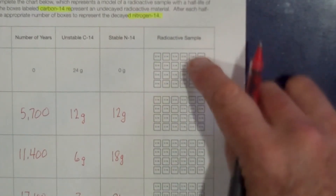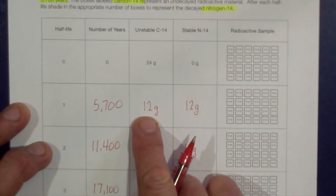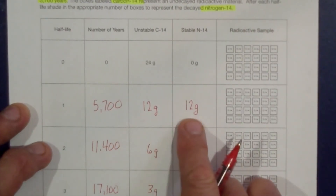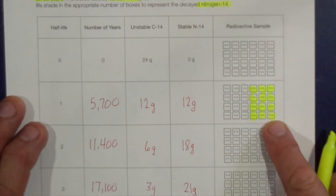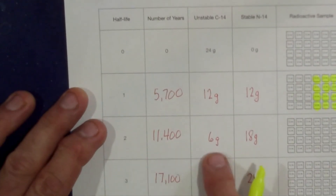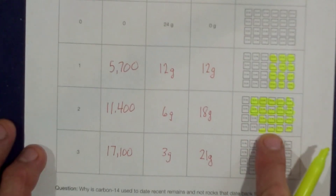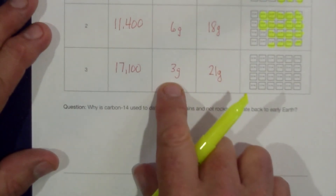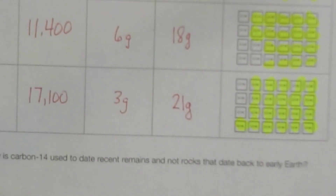For filling in the boxes: at zero half-lives, all boxes remain blank (all carbon-14). After one half-life, we have 12 grams of carbon-14 and 12 grams of nitrogen-14 — shade in 12 boxes to represent the nitrogen-14. After two half-lives, we have 6 grams of carbon-14 and 18 grams of nitrogen-14 — shade in 18 boxes. After three half-lives, we have 3 grams of carbon-14 and 21 grams of nitrogen-14 — shade in 21 boxes.